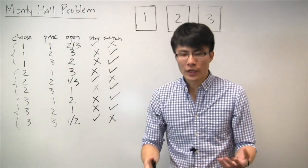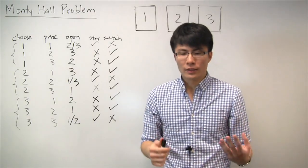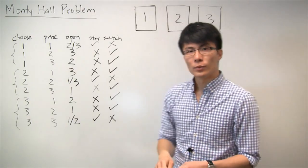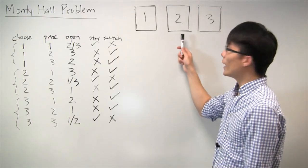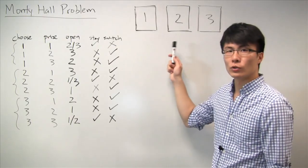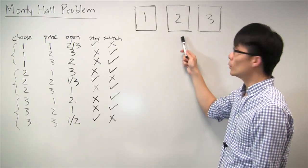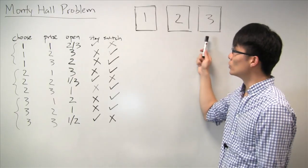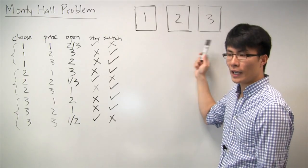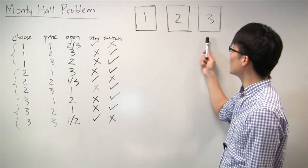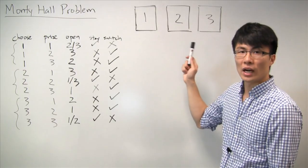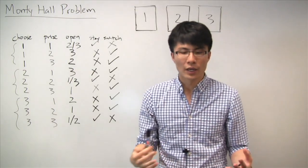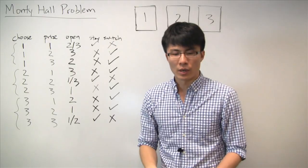So the question we're trying to answer is: what is the better strategy — to stay with your initial choice or to switch to the other unopened door? It turns out that the specific rules here are very important. Specifically, the rule about how your friend chooses to open doors — that he will always open one of the two other doors you haven't picked, and he will make sure that door doesn't have a prize behind it.